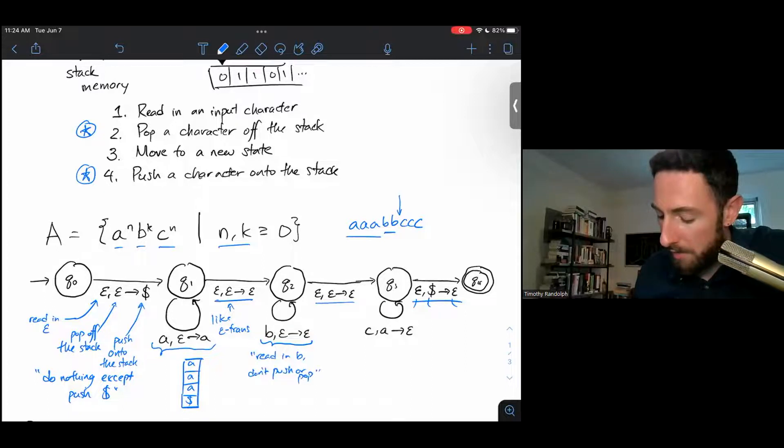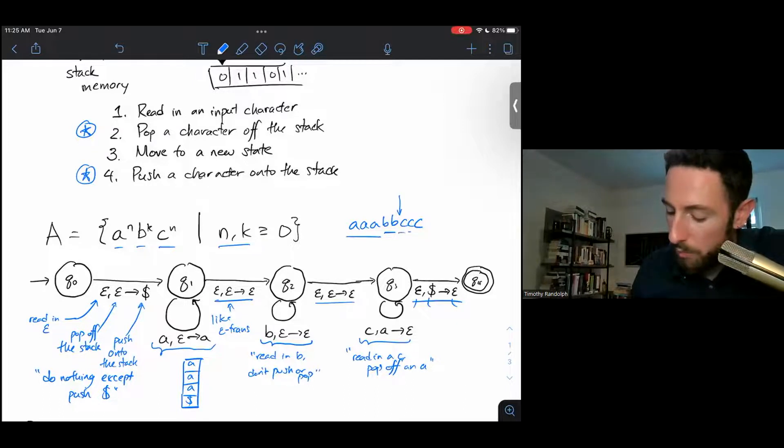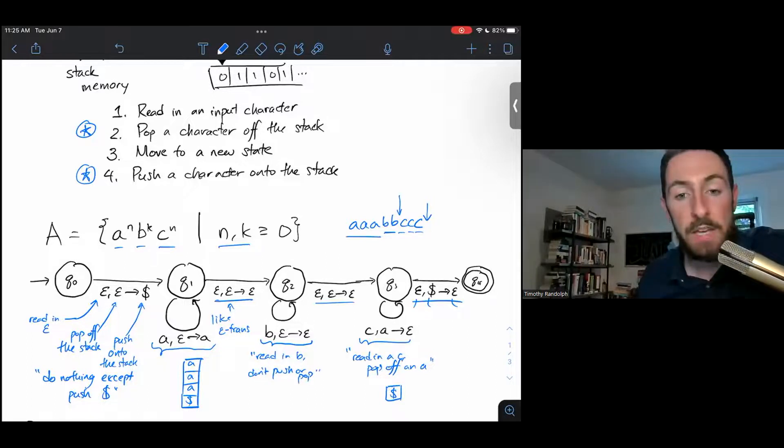We can take this epsilon transition from Q2 to Q3. Finally, this transition can be read as read in a C and pop off an A. So if we take this transition three times, every time we read in a C, we also pop an A off the stack. So by the time we're done, we have both reached the end of our input string and we've also popped off every A that we put on the stack. At that point, we can then pop off the dollar sign and we end up in Q4 with having read in our whole input string and having nothing in our stack.